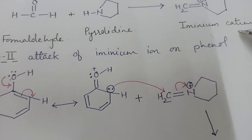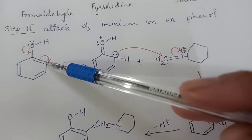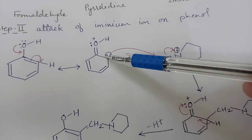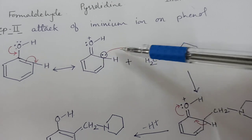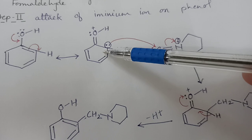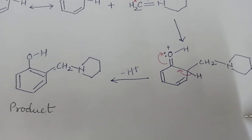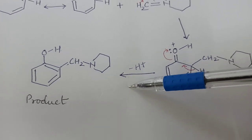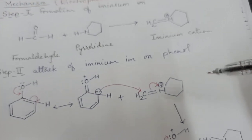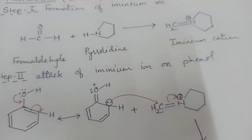This iminium cation acts on the phenol. In phenol, OH is the ortho-para directing group; it generates negative charge on the ortho position. So the iminium ion attacks the ortho position of the phenol, forming an addition product, and after removal of the proton it forms the product. So the same mechanism can be applied for the Mannich reaction of phenols.